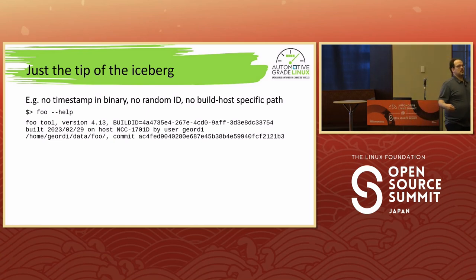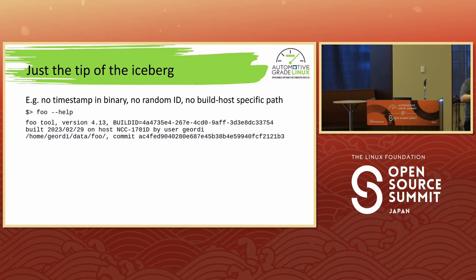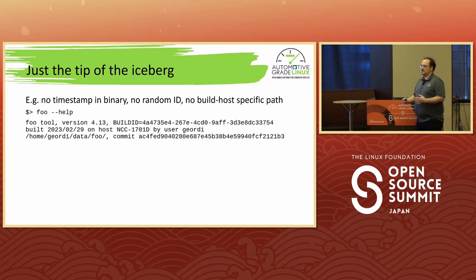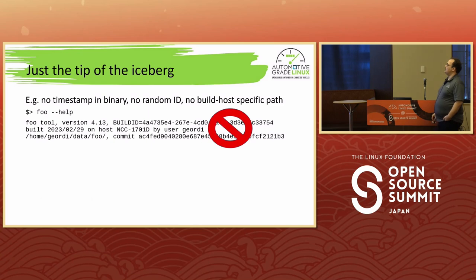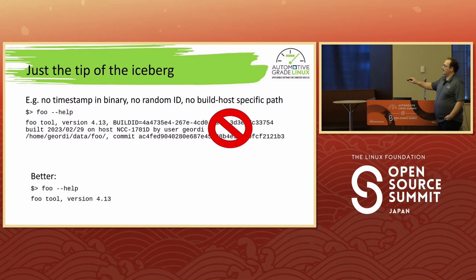Think of it — the commit ID might change just because you changed the documentation. The actual application binary should be exactly the same, but if we embed a build commit ID, of course that helps during development, but later on during distribution, this hurts. So better don't do that — use your release version and encode that.